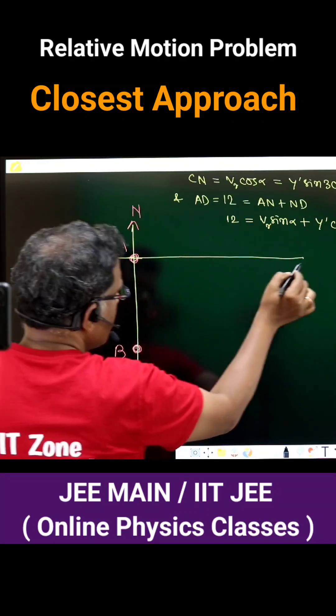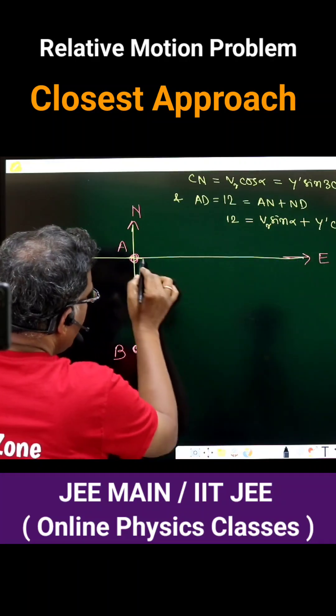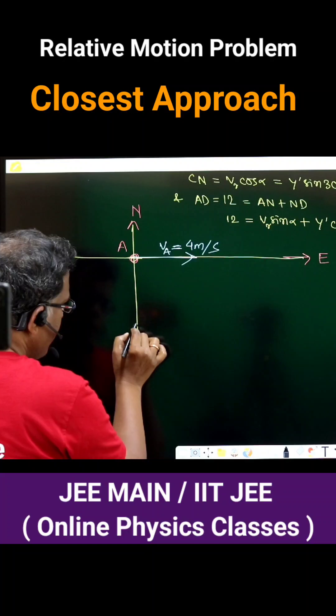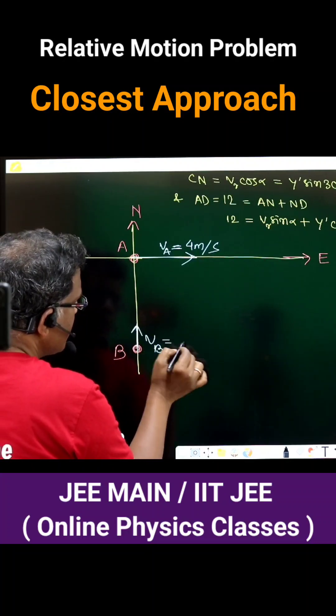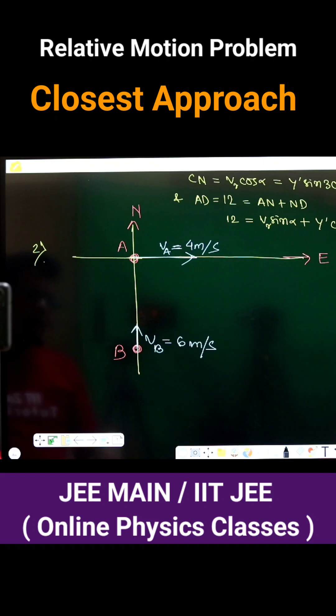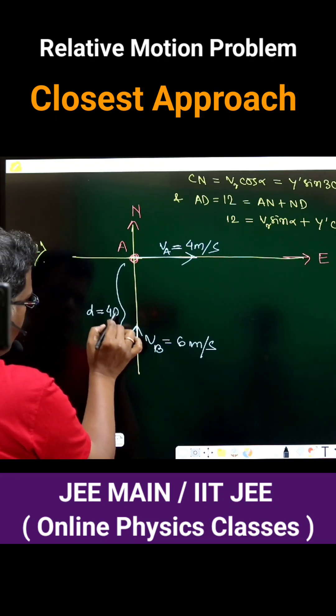According to the diagram, this is north, this is east. So A is running with a speed of 4 meters per second due east, and at the same time B is running with a speed of 6 meters per second due north. A to B separation is 40 meters distance.